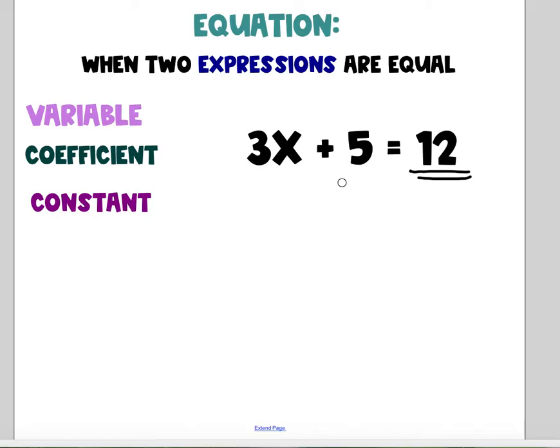Equations have things called variables, coefficients, and constants. The variables are the letters that we use for the unknown amount. In this case the variable is x. The coefficient is the number in front of the variable. So the coefficient here is 3. It's the number that works with the variable.